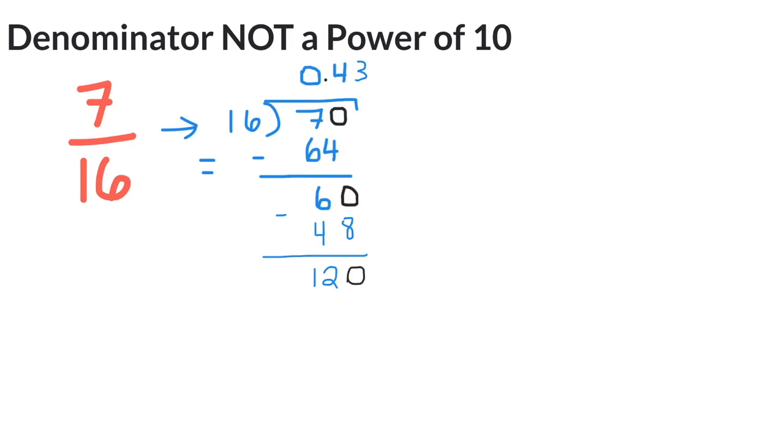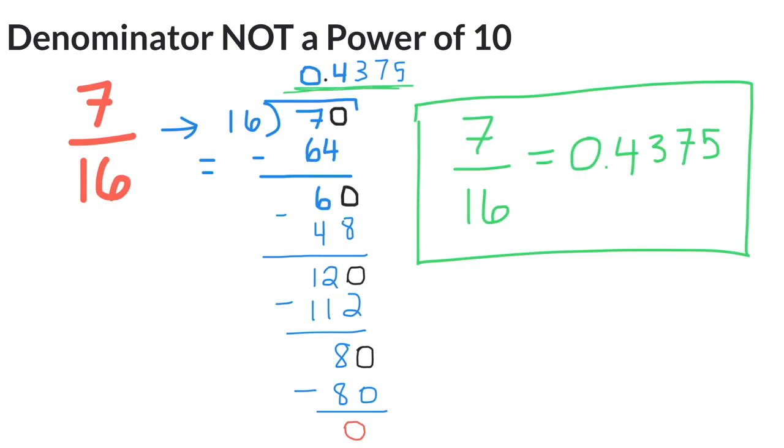Adding a zero again, we know that 16 goes into 120 seven times, and 7 times 16 leaves us with another remainder of 8. Adding one more zero, we can see that 16 goes into 80 five times, but this time around we have a remainder of 0. So in this case, we are done.